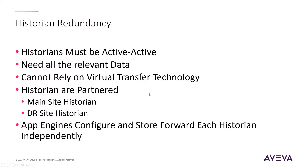Historians are part of the redundancy scenario and must be active-active — you can't have a historian in a passive state. They need all the relevant data. Historians are partnered: in this demonstration, a main site historian and a DR site historian are synchronized. The app engines do all that synchronization — they synchronize the configuration and the store forwarding to each historian independently.